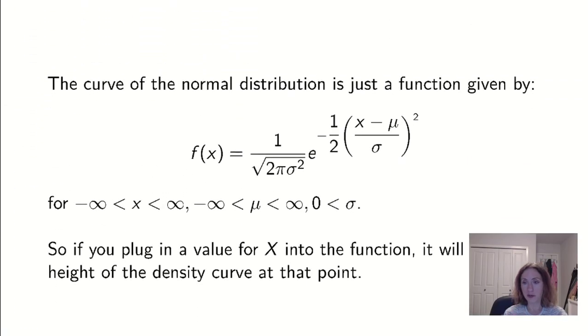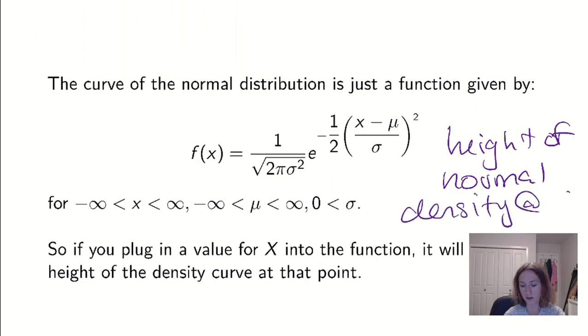So we said that was a curve. When we had that uniform distribution, we had a straight line. Y is equal to height. The normal distribution has a slightly more complicated formula to it. This is the function that graphs the bell-shaped curve. This will describe the height of our normal density curve at x. So I plug in an x, it tells me what the height of that curve is.